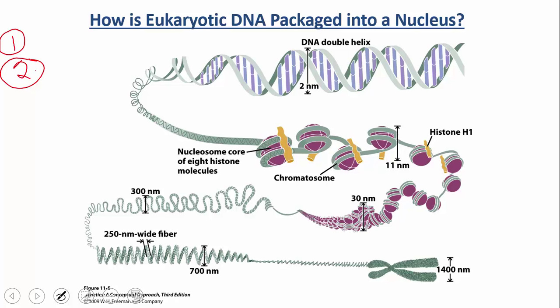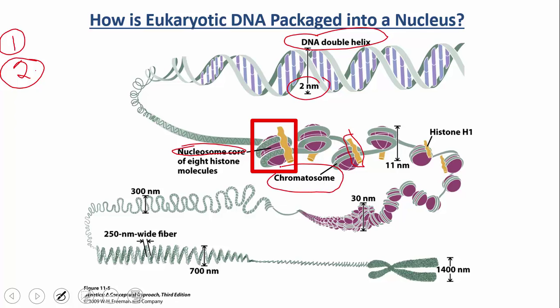The first structure is called the naked DNA double helix, with a width of about two nanometers. Moving up a level, the DNA starts to wind around spheres called the nucleosome core, made out of eight proteins called histone proteins. The DNA wraps around that to form something called the nucleosome. Once you add another histone, it becomes something called a chromatosome. This overall structure looks like beads on a string — that's what it's called in the scientific literature. The width of one of these nucleosomes or chromatosomes is about 11 nanometers.